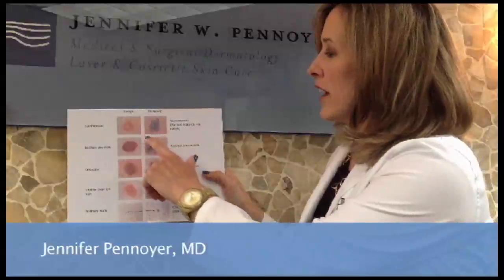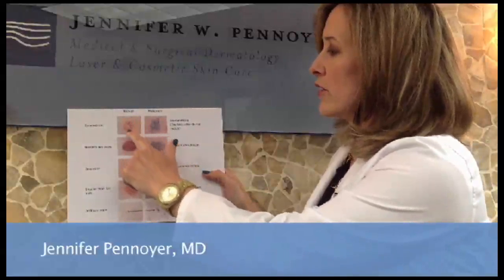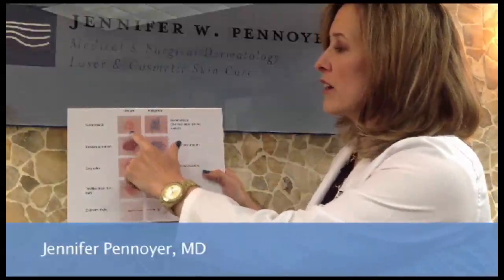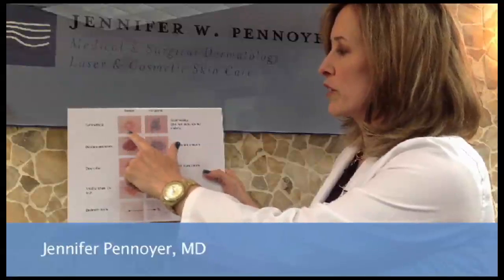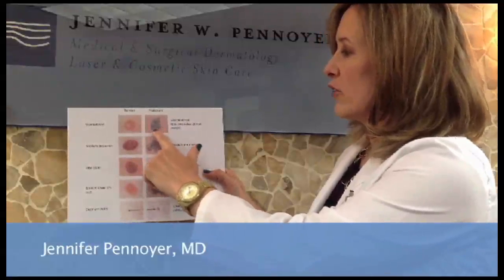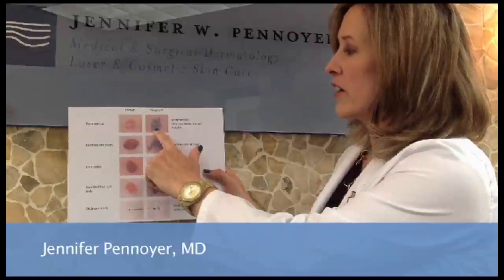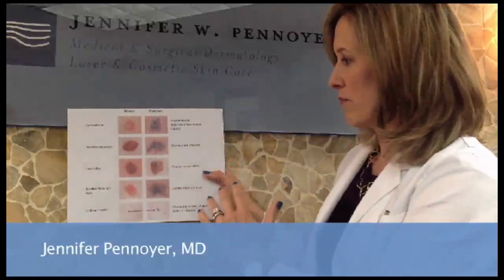First is asymmetry. You want the skin lesions on your body to be close to perfectly round or oval. As you see in this case, it's very asymmetric — one side does not match the other.